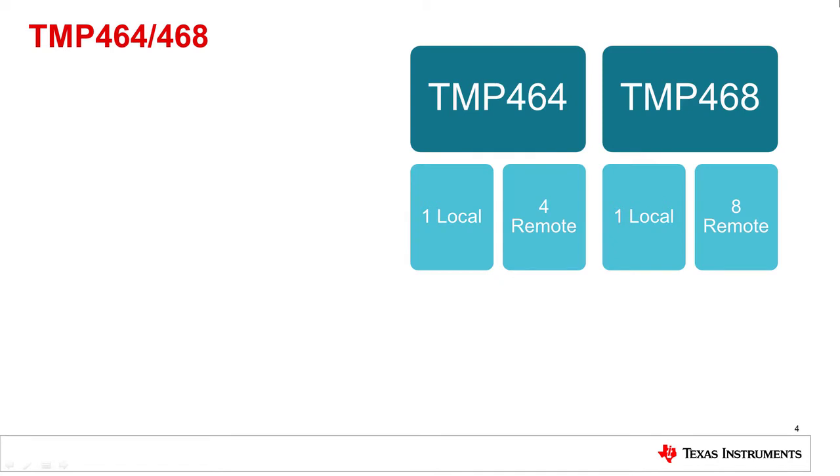The primary functional difference between the TMP464 and 468 devices is the number of channels. The TMP464 has a total of five channels, one local and four remote, and the TMP468 has a total of nine channels, one local and eight remote.